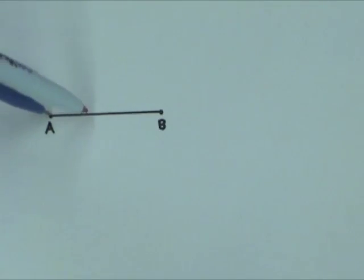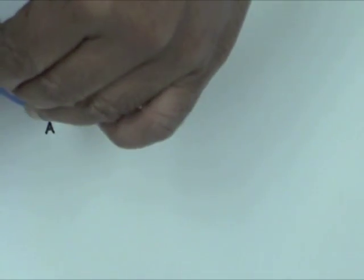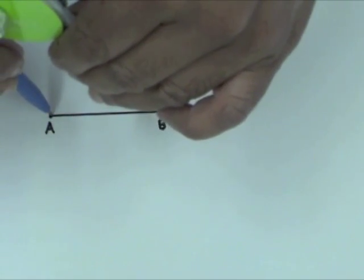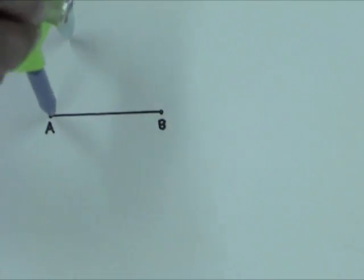Place the compass point on A and set the compass width to more than one-half the length of AB. Draw a large arc.